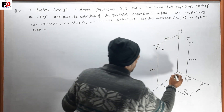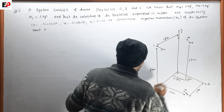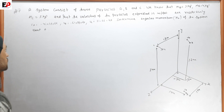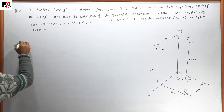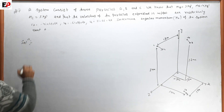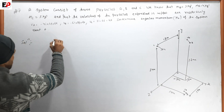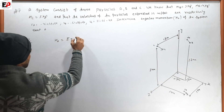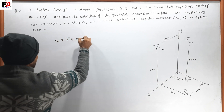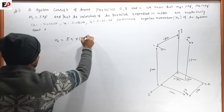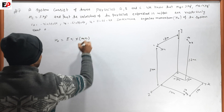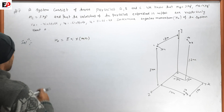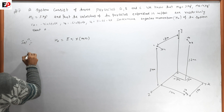Angular momentum about O. Solution: H₀ = summation of rᵢ cross mᵢvᵢ. Now we have the position vectors.